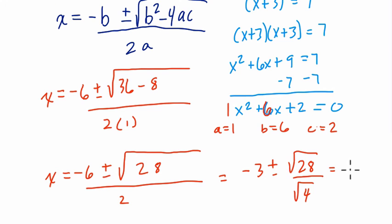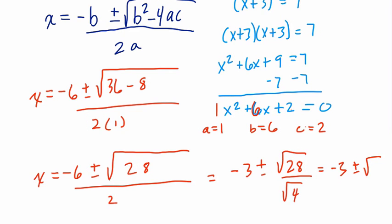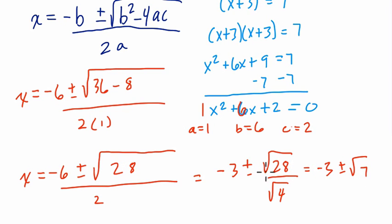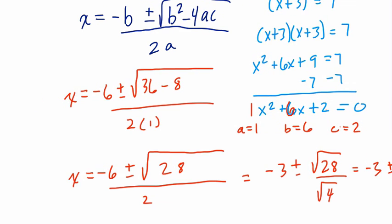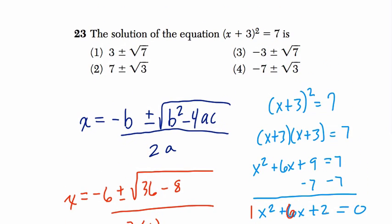So we can think of this as negative 3 plus or minus the square root of 7. Right? The square root of 7, I got that because 28 divided by 4 is just 7. And this is our answer. So negative 3 plus or minus the square root of 7. That's choice 1. Thanks.